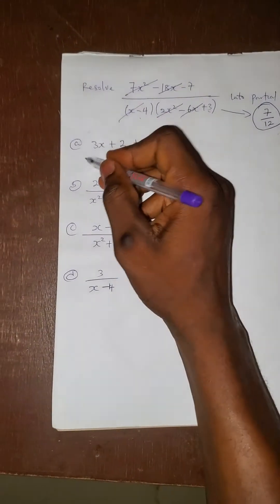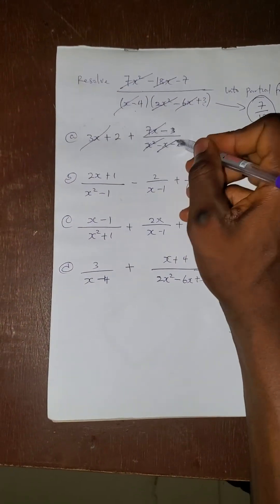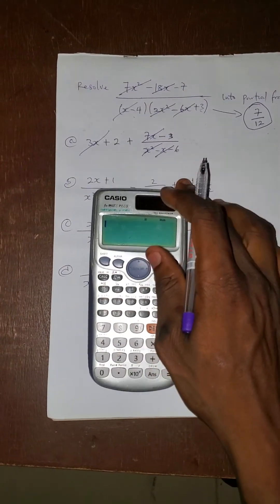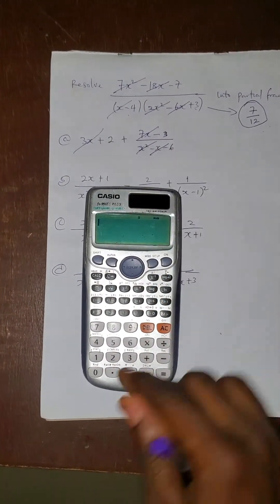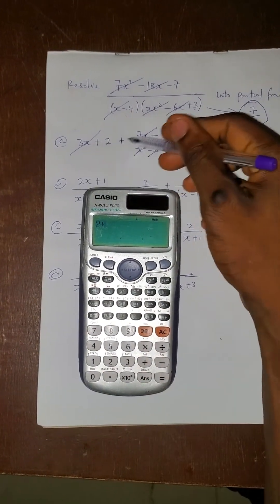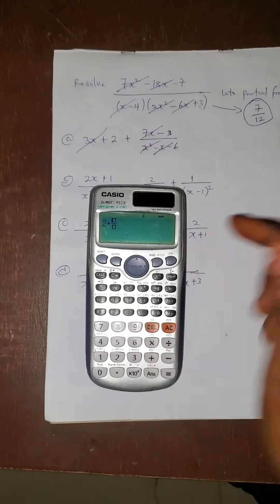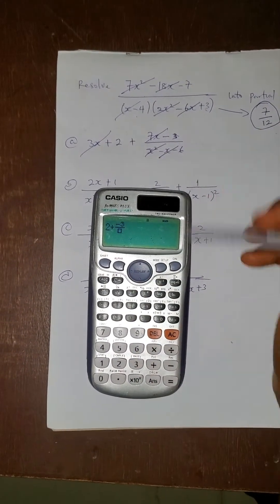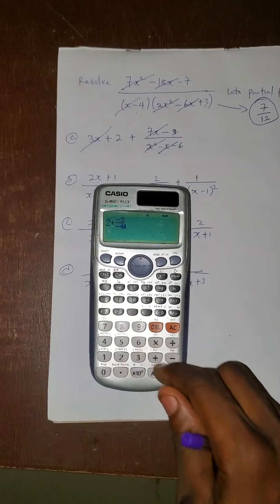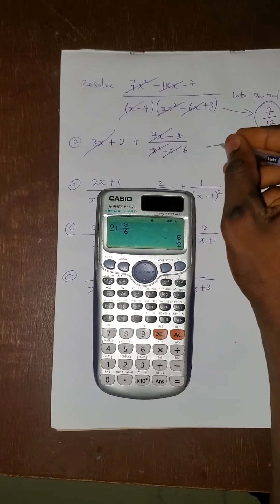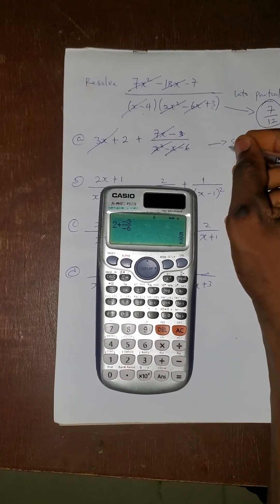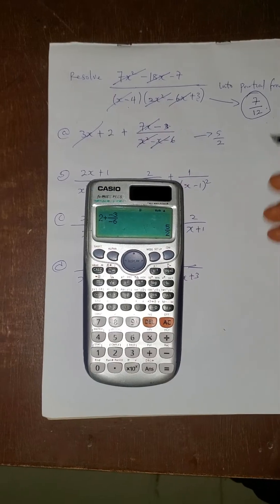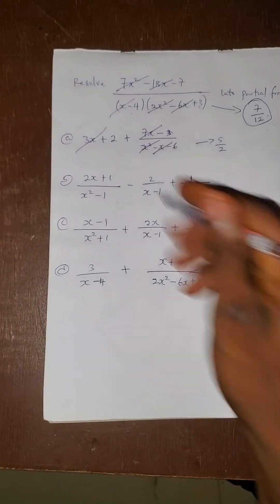Now for Option A: I will cancel this, I will cancel this, I will cancel this, I will cancel this. What remains here is 2, then plus — using the fraction button — what remains at the numerator is minus 3 over minus 6. Press equals. You can see that this gives 5 over 2. Is 5 over 2 the same as 7 over 12? No. Let's come to Option B.